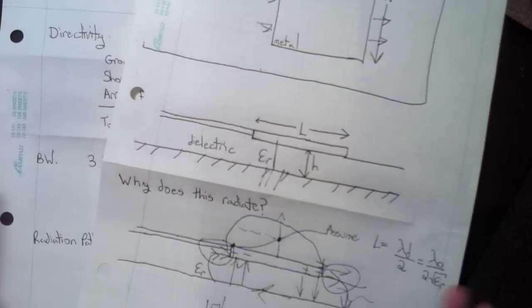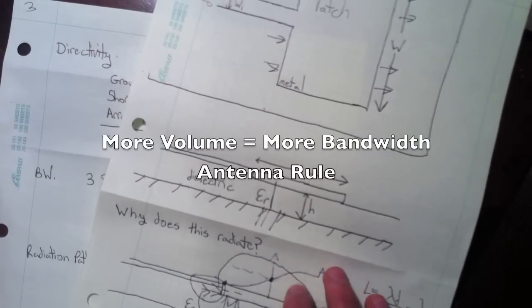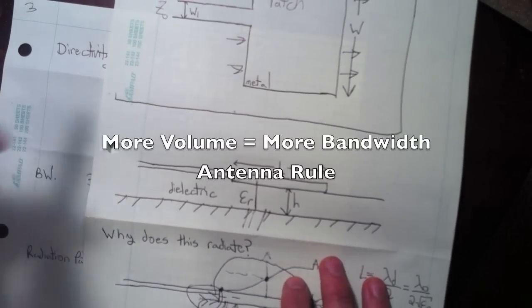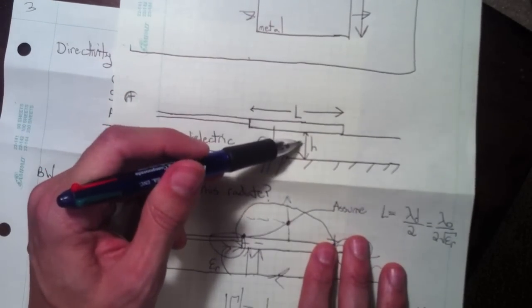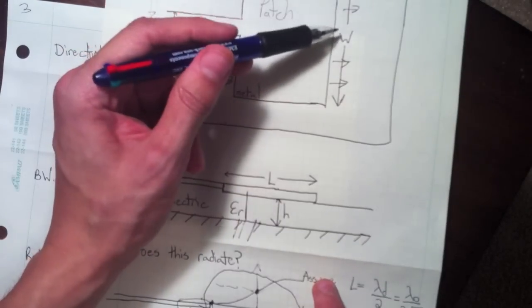So in general, for all antennas, more volume equals more bandwidth. Ways to increase your bandwidth would be increase your height H, and also increase W.